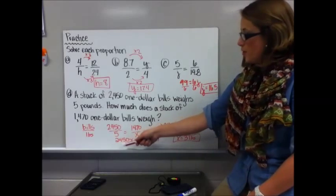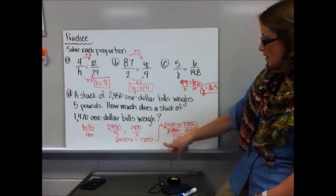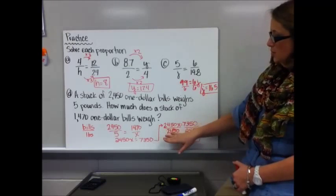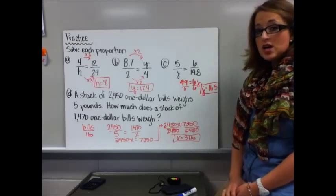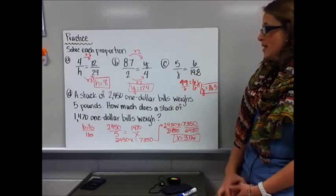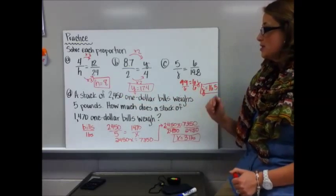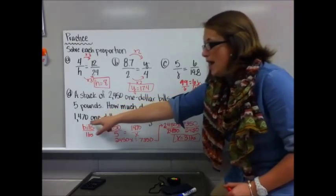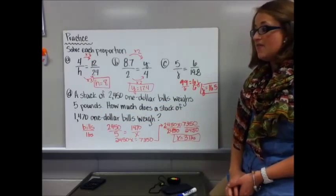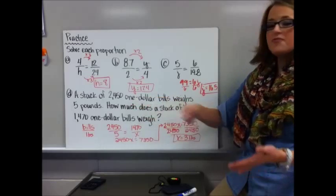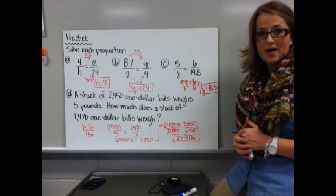Cross-multiply: 2,450x equals 5 times 1,470, which is 7,350. Divide both sides by 2,450 and x equals 3 pounds. Check that your answer makes sense: fewer bills should weigh less than 5 pounds. Also, 1,470 is a little more than half of 2,450, so 3 pounds being a little more than half of 5 pounds is reasonable.